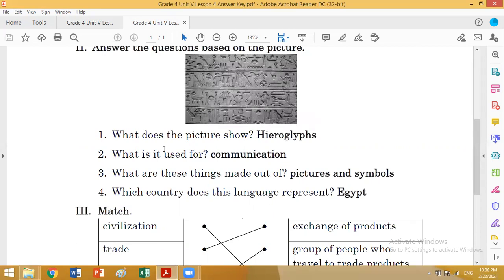What are these things made up of? Pictures and symbols. Number four: Which country does this language represent? Egypt.